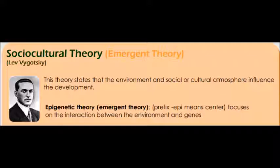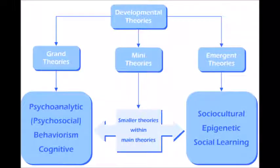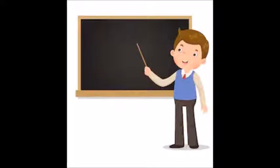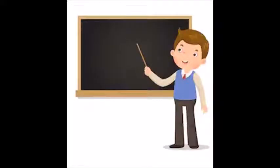Now you can remember easily: there are four types of developmental theories — grand theory, mini theory, meta theory, and emergent theory. Grand theories are bigger theories that deal with phenomena holistically. Mini theories are extracted from grand theories, narrower in scope, and focus on a specific idea. Two or more mini theories fuse together to form meta theories. Emergent theories combine information from two or more academic fields such as psychology and sociology, or environment and biology. I hope this lecture helps you understand the differences between these theories. Thank you very much for watching.